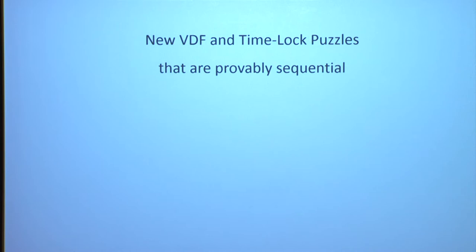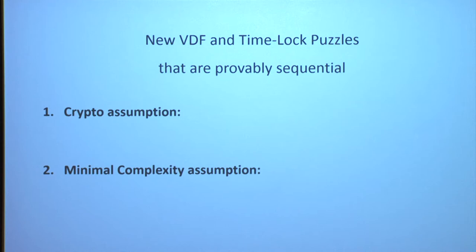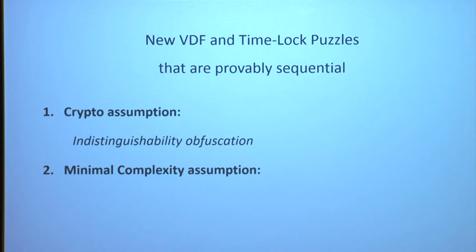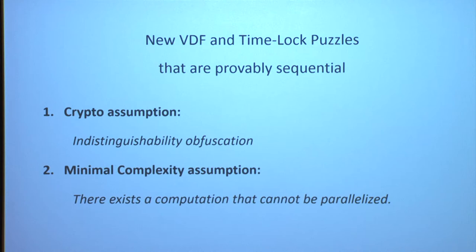For the time I have left, I want to tell you how to overcome this barrier — how to construct VDFs and time-lock puzzles that are provably secure and provably sequential — under two hardness assumptions. First, we have a cryptographic assumption: the existence of indistinguishability obfuscation, a very powerful cryptographic tool that we've recently been able to construct from new mathematical assumptions. Our confidence in this assumption is increasing with time. Second, we need a minimal complexity-theoretic assumption: that there exists some computation that cannot be parallelized. This seems like a very mild assumption, and we'll see that it's also necessary.